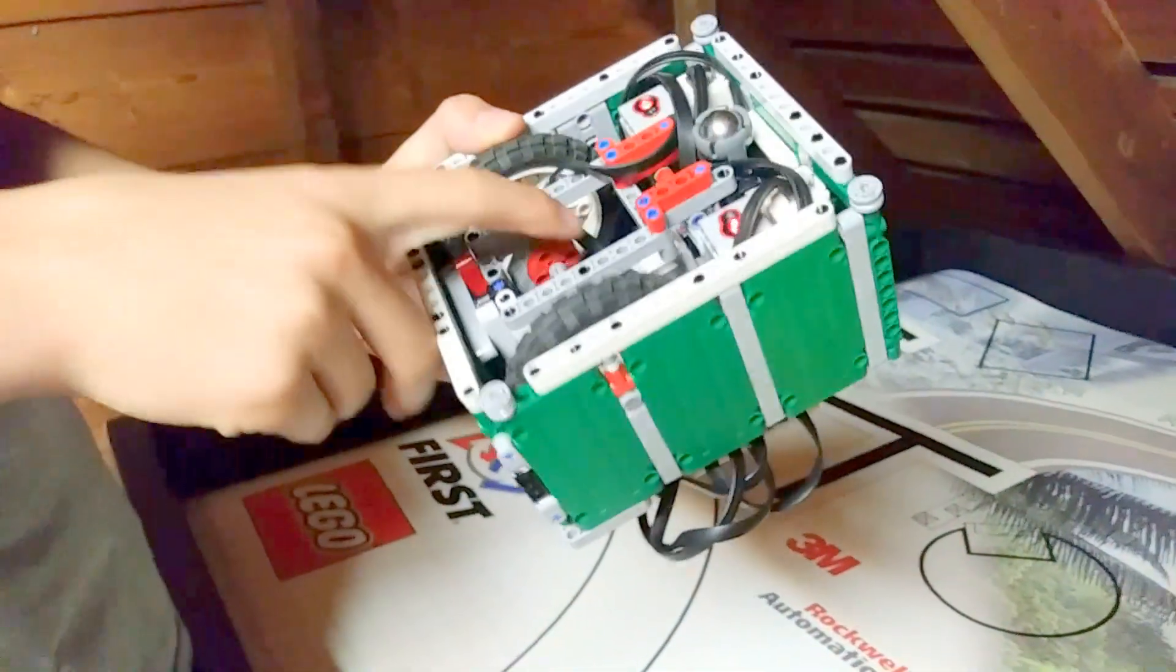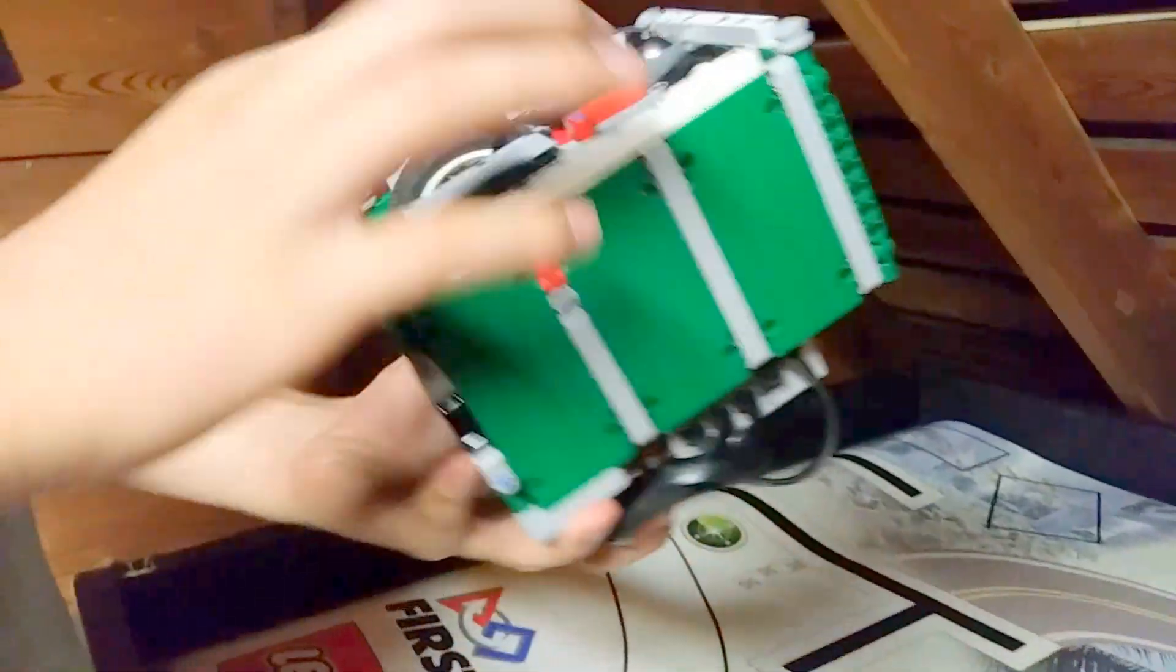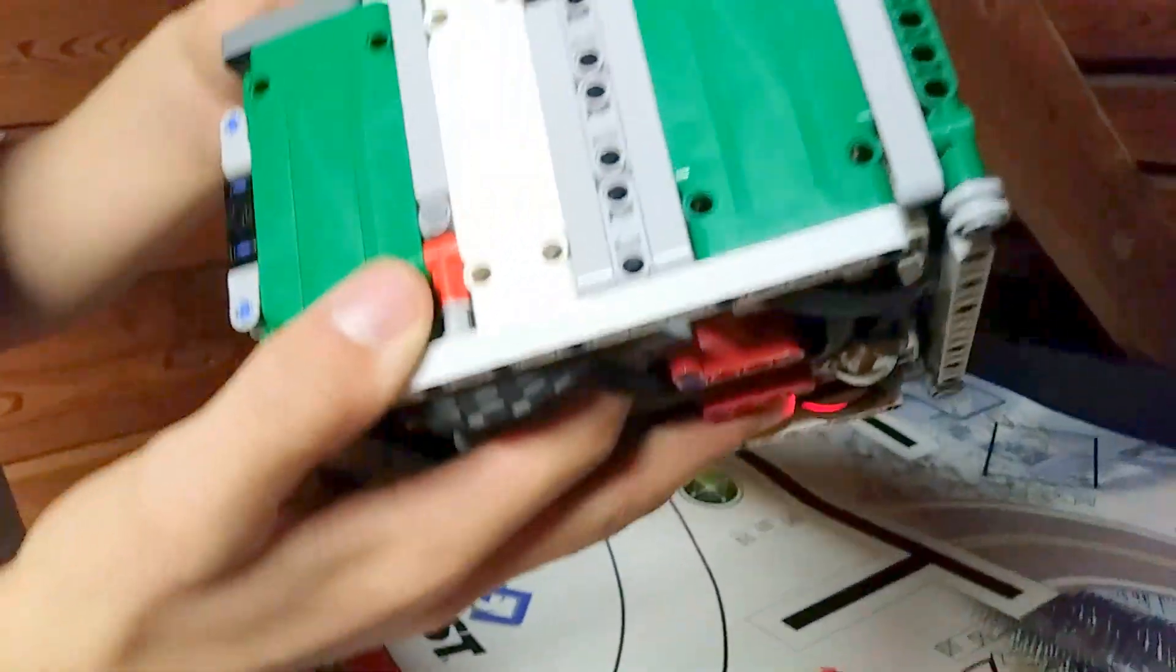We also have our gyro sensor that's in the robot's center of mass down there. It's in a very nice place because it's not in the way of anything.